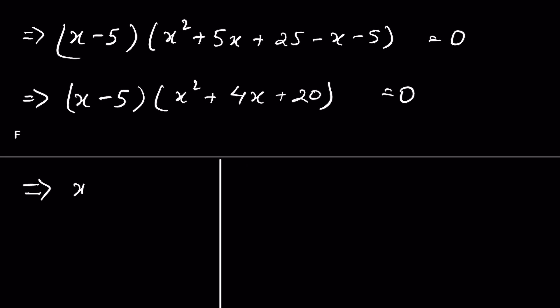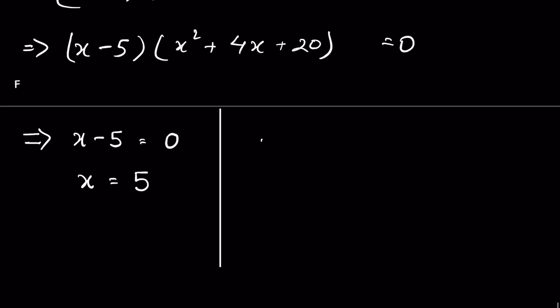Now we have two values for x. When x minus 5 is equal to 0, x is equal to 5. When x squared plus 4x plus 20 is equal to 0, we use the quadratic formula.